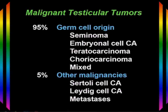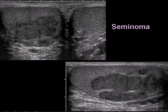Testicular tumors are mostly malignant. The most common kind are germ cell tumors — about 95% will prove to have germ cell origin, being either seminomas, embryonal cell cancers, teratocarcinomas, choriocarcinomas, or a mixed germ cell tumor. We also may find other malignancies inside the testicle, including Sertoli cell or Leydig cell cancers or metastatic disease.